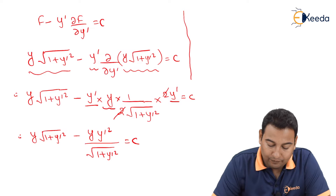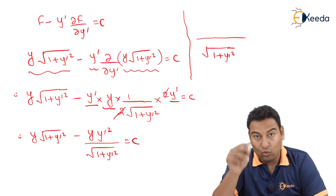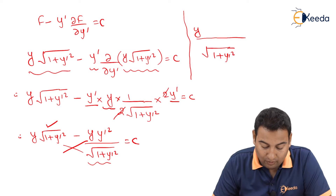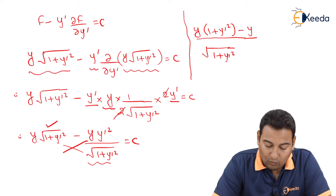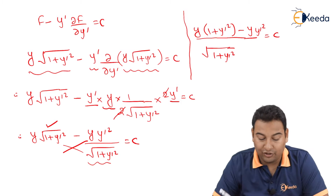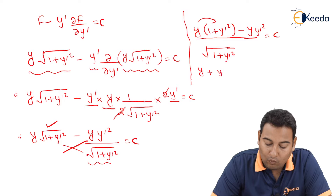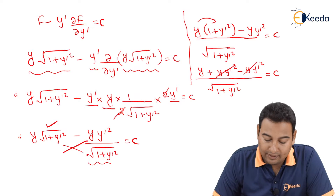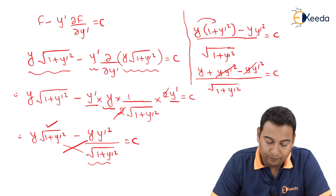Taking LCM as root of (1 plus y dash square) and cross multiplying: y(1 plus y dash square) minus y · y dash square equals c · root of (1 plus y dash square). Opening the bracket: y plus y · y dash square minus y · y dash square upon root of (1 plus y dash square) equals c. The y · y dash square terms cancel, leaving: y upon root of (1 plus y dash square) equals c.